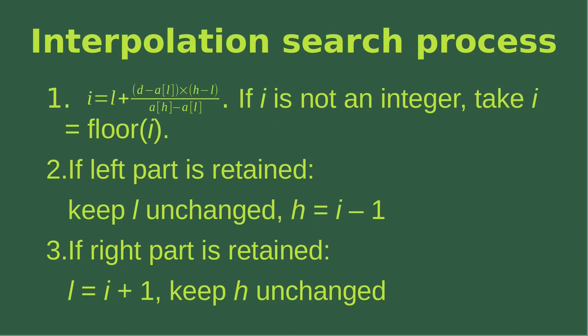Let us see how we can make use of the value of i obtained from the indices and their values. First, we determine the value of i using the formula. If i is not an integer, we take the floor of it to get the integer part. Second, if the left part is to be retained, we keep the value of l unchanged and change the value of h to i minus 1, so that we search the left-hand part.